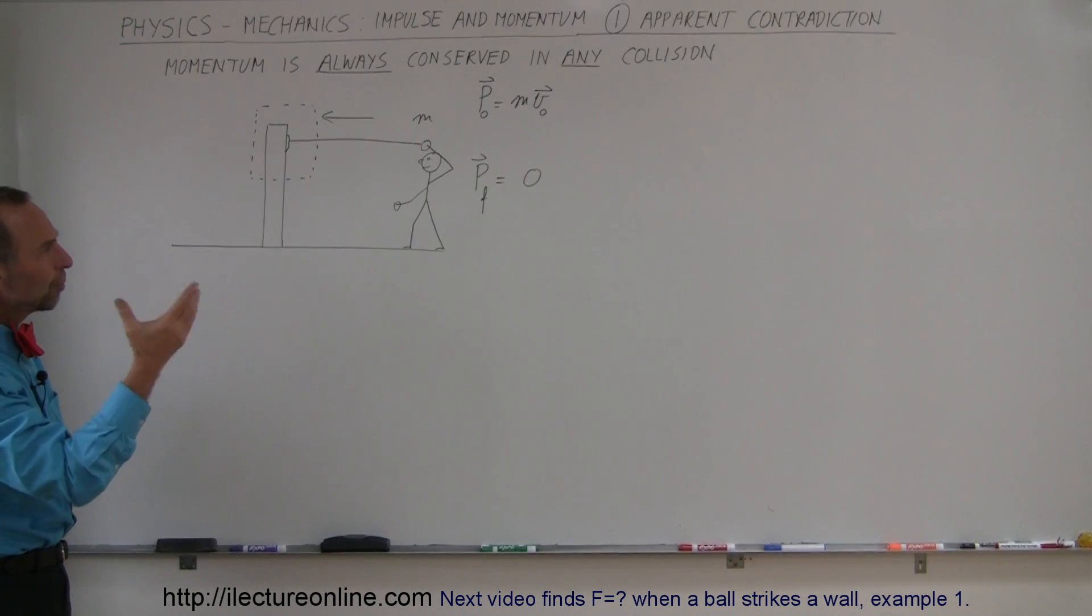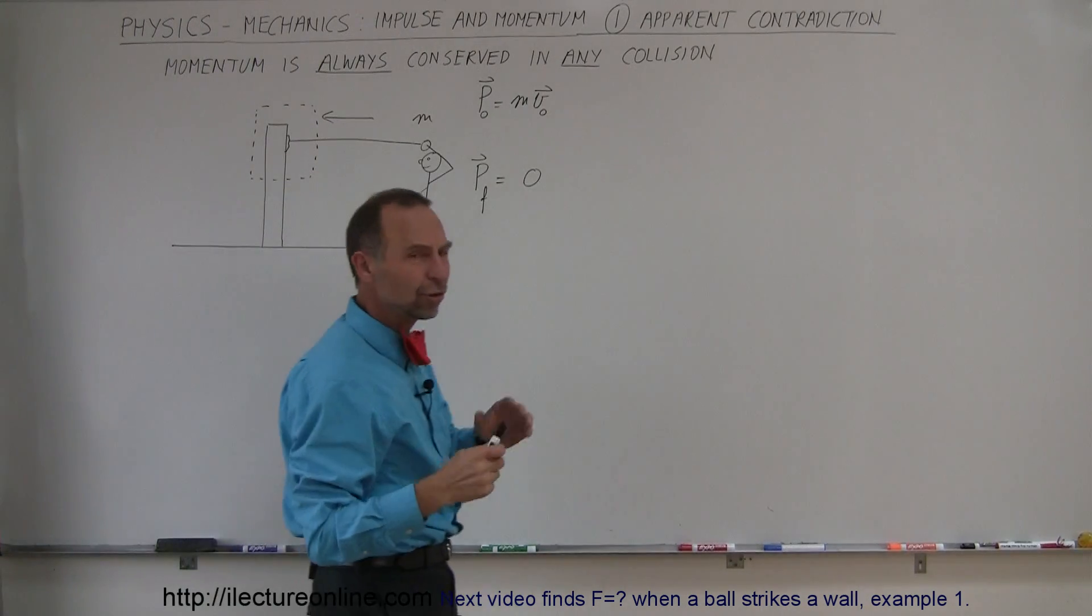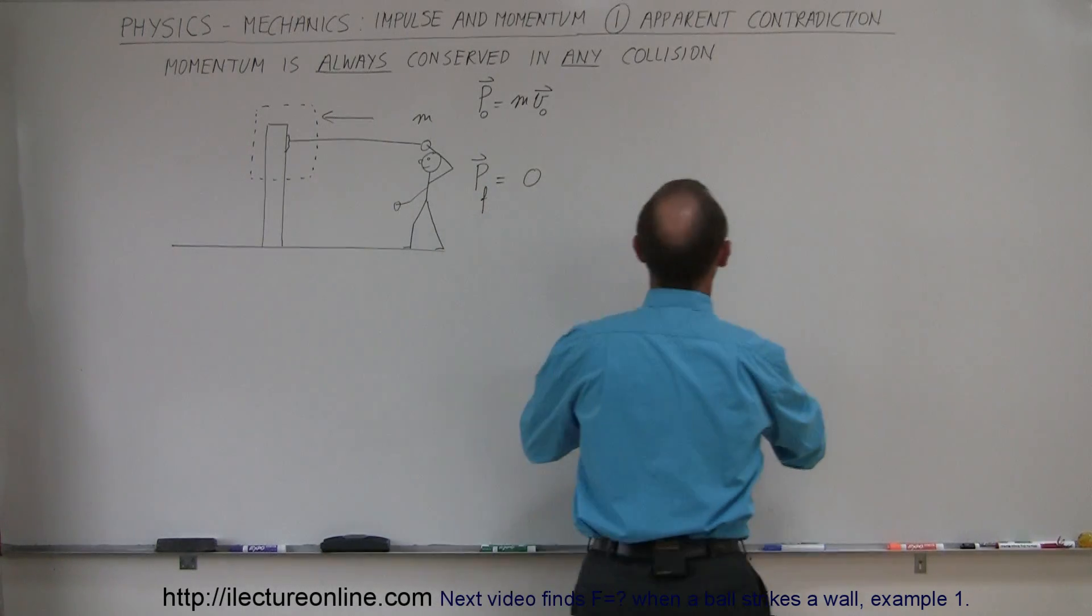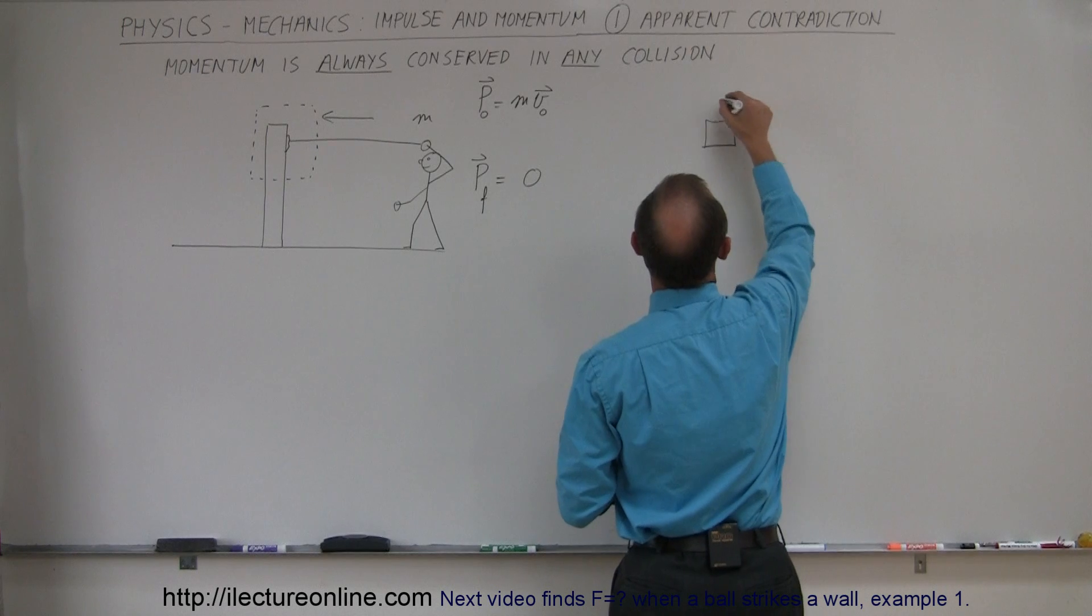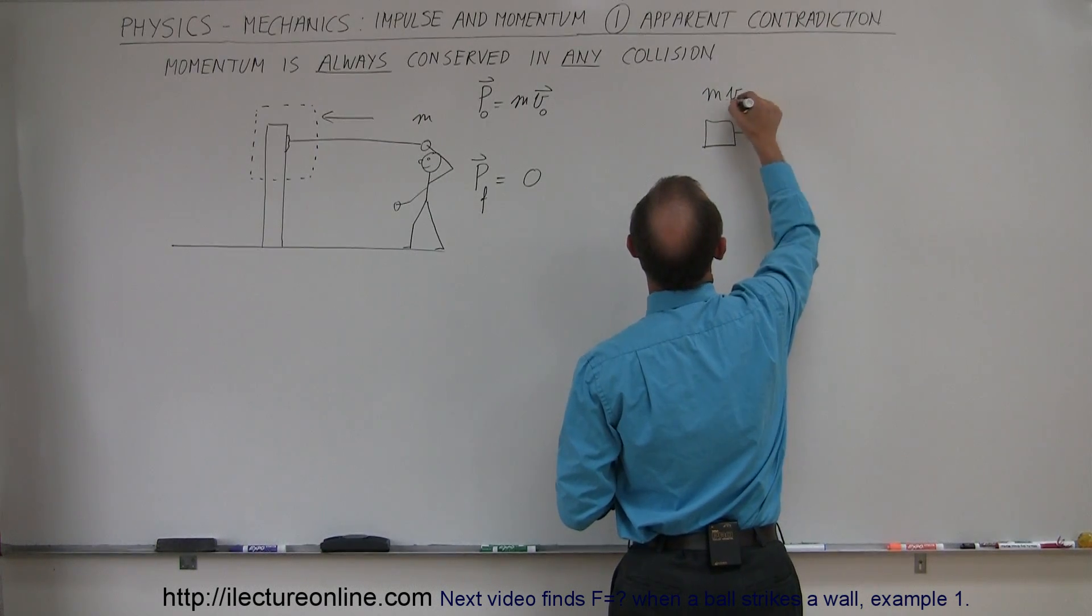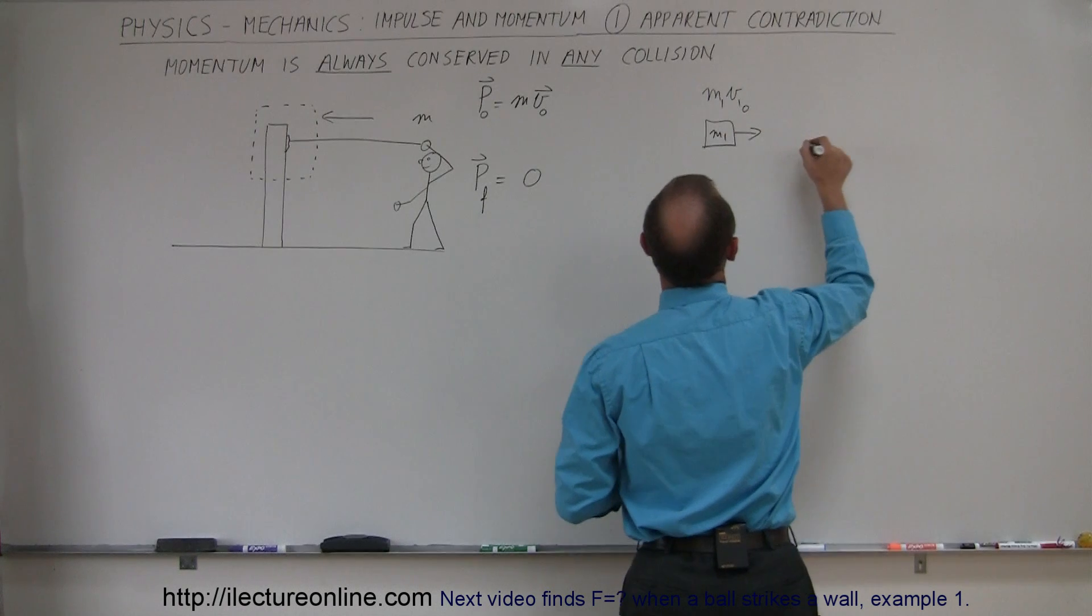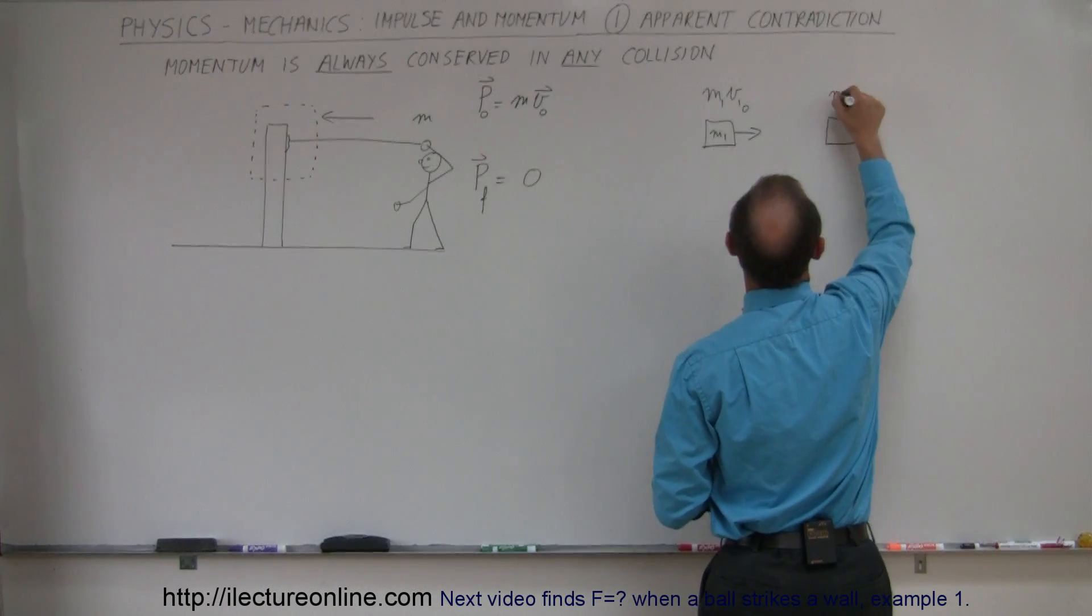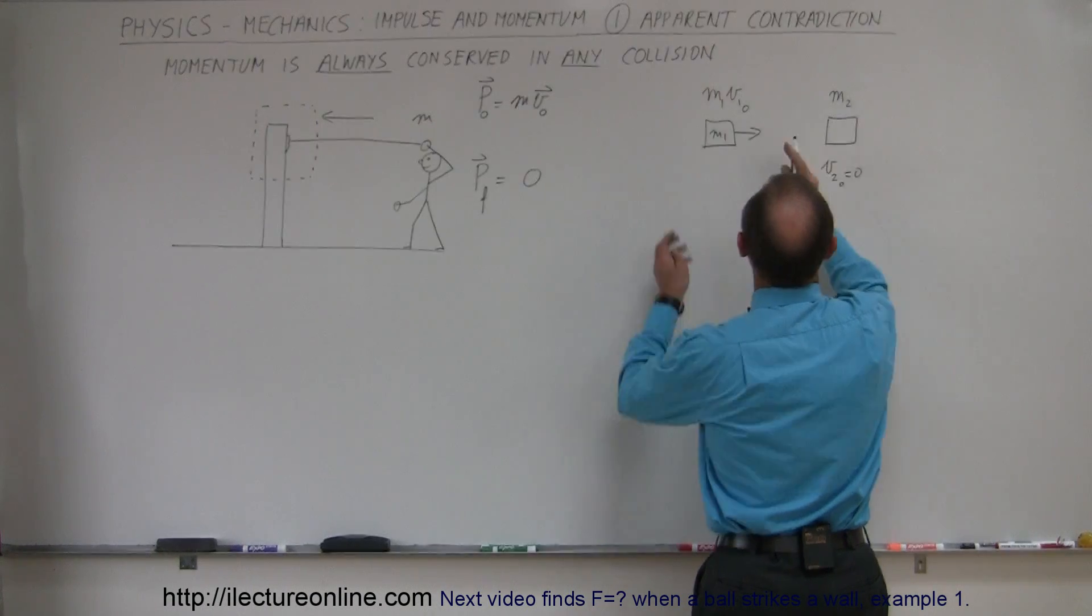Remember what happens when we have another collision, just to make it seem a little more plausible. Let's say that we have an object here with initial velocity. We have M1, V1 initial like that, and this is M1. And let's say there's a second object, which is M2, and let's say that V2 initial is equal to zero. And they collide.